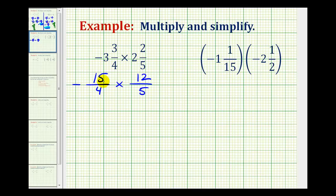Again, we have a lot of common factors between the numerators and denominators, so I'm going to write everything out in prime-factored form. So we'll have negative, the prime factorization of 15 would be three times five, the prime factorization of four would be two times two, the prime factorization of 12 would be two times two times three, and five is prime.